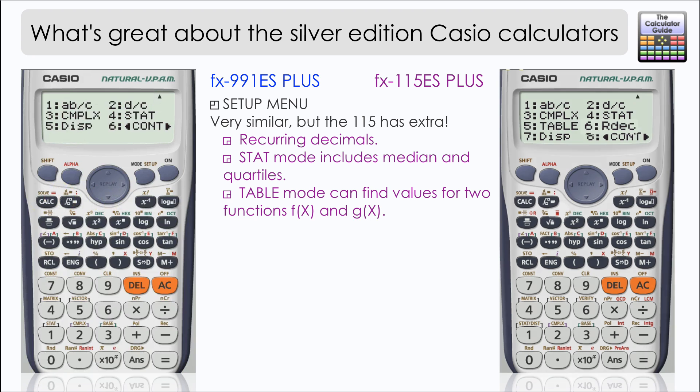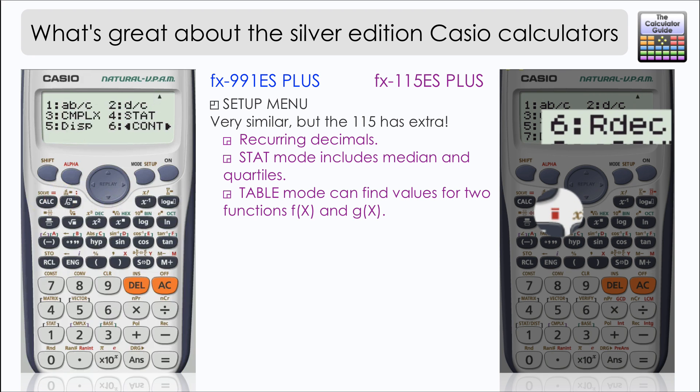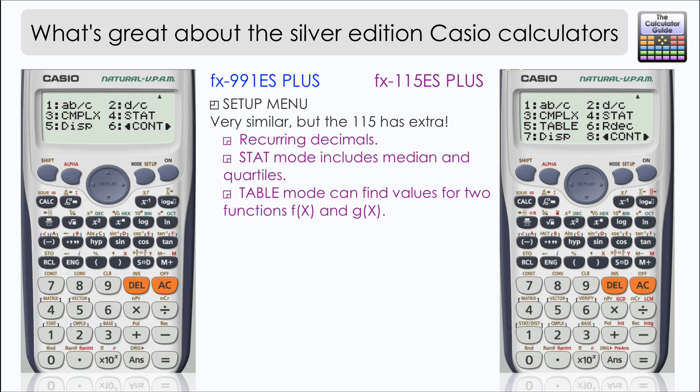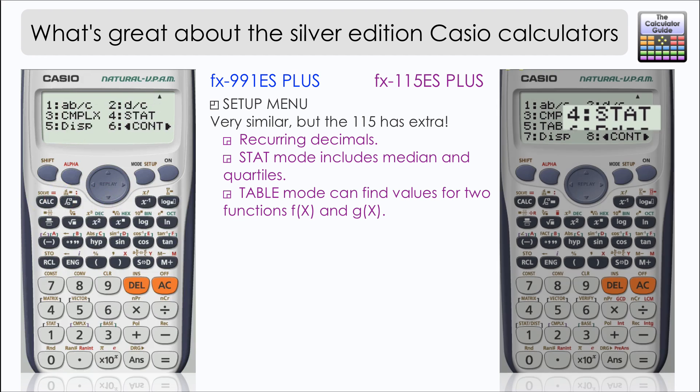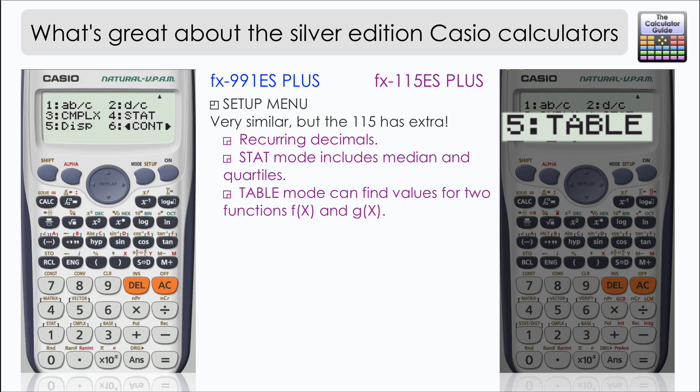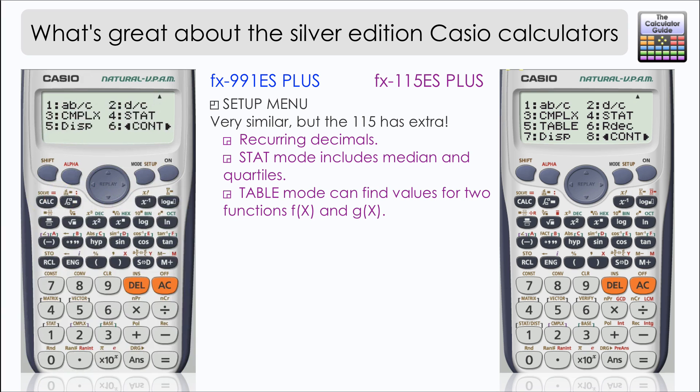There is recurring decimals which seems to be absent from the 991. Stat mode also includes extra features such as being able to calculate the median and the quartiles, and table mode can be adjusted here in the 115 for two functions of X, so an FX and a GX, and that's really great to be able to make comparisons between two functions of X.